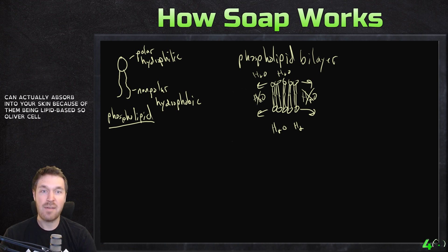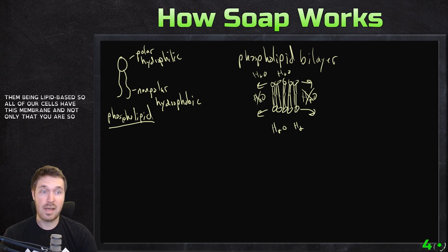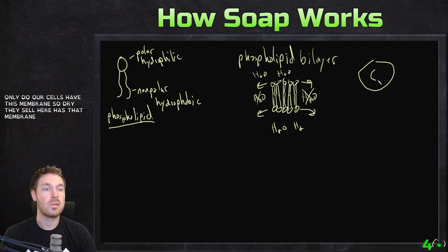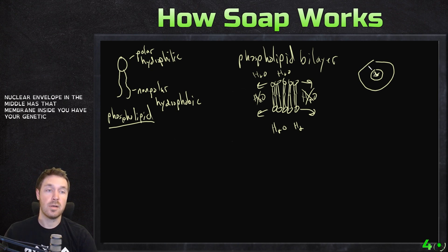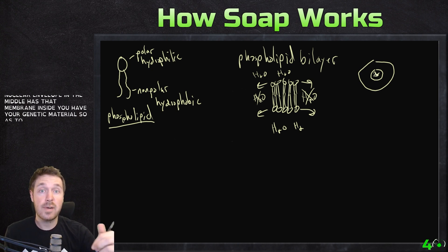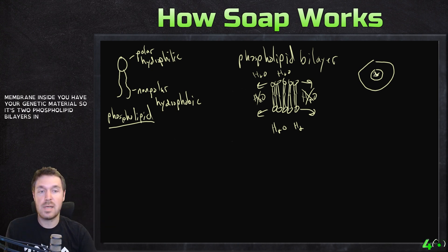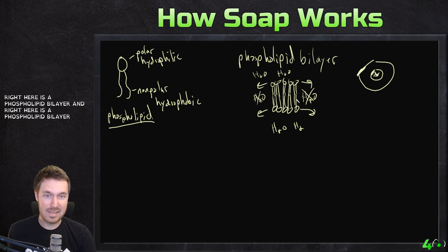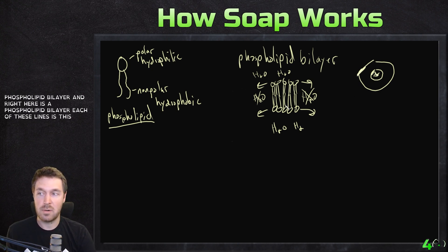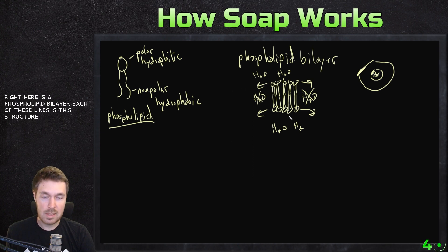So all of our cells have this membrane. And not only do our cells have this membrane — drawing a cell here — it has that membrane. Also the nuclear envelope in the middle has that membrane, where then inside you have your genetic material. So there are two phospholipid bilayers in the cell — right here is a phospholipid bilayer, and right here is a phospholipid bilayer.